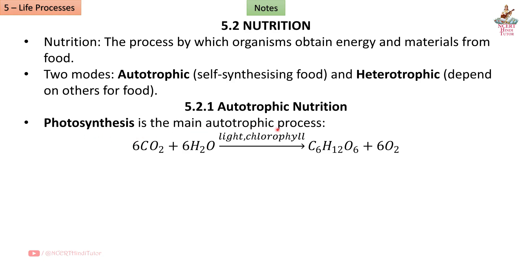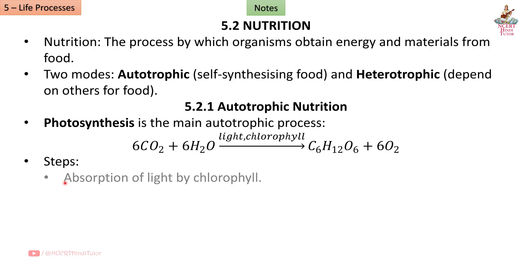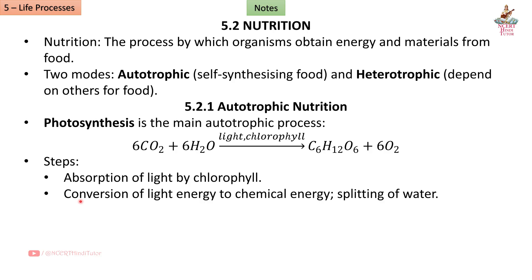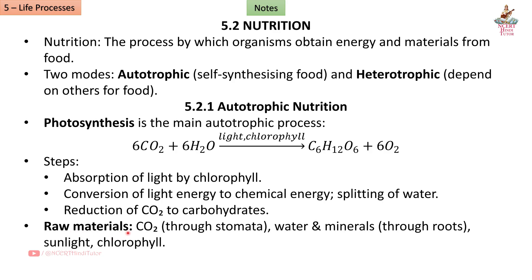Section 5.2.1: Autotrophic Nutrition. Photosynthesis is the main autotrophic process: 6CO₂ + 6H₂O, in the presence of light and chlorophyll, yields C₆H₁₂O₆ + 6O₂. Steps include absorption of light by chlorophyll, conversion of light energy to chemical energy, splitting of water, and reduction of CO₂ to carbohydrates. Raw materials: CO₂ enters through stomata, water and minerals through roots, and sunlight via chlorophyll.